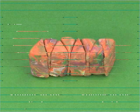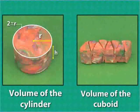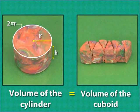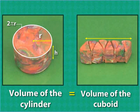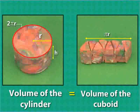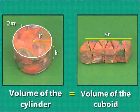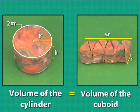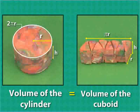The 8 equal parts form a cuboid whose volume equals the volume of the cylinder. The length of the cuboid is half the circumference of the base of the cylinder. The breadth of the cuboid equals the radius of the cylinder. The height of the cuboid equals the height of the cylinder.